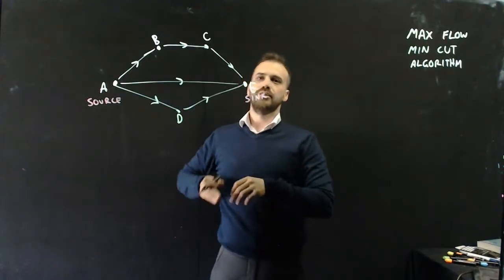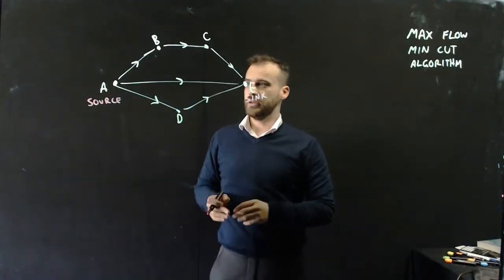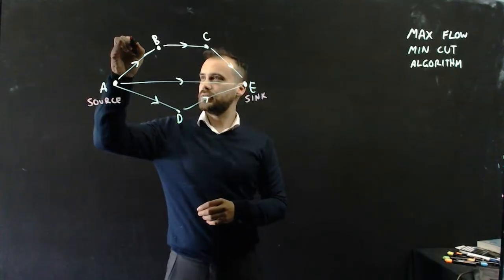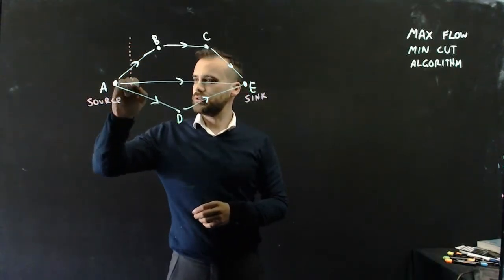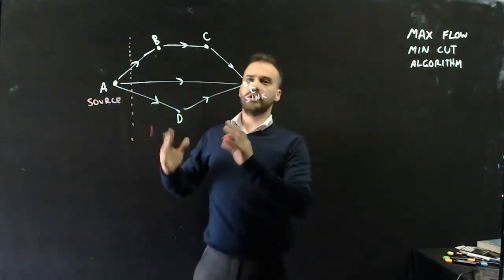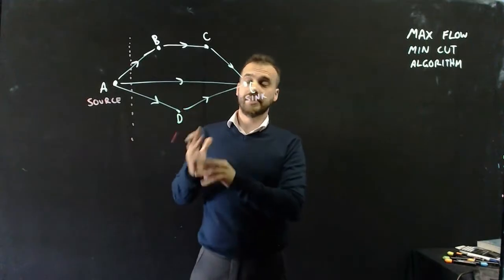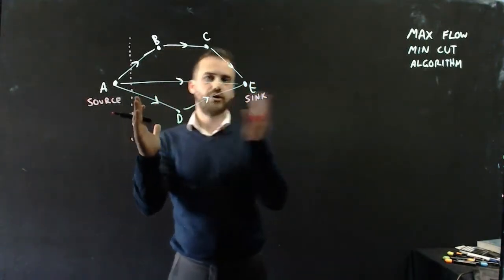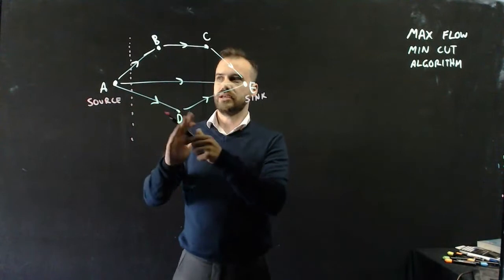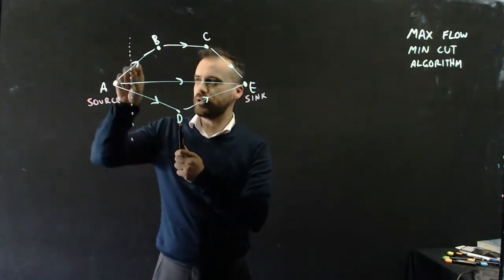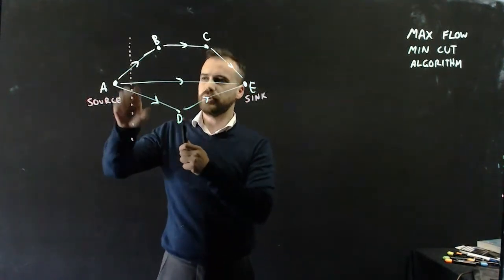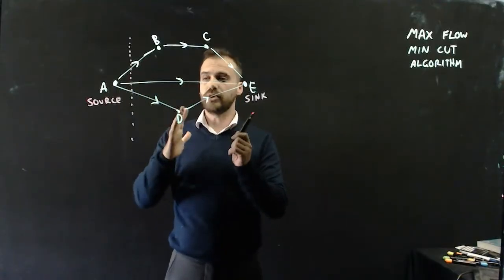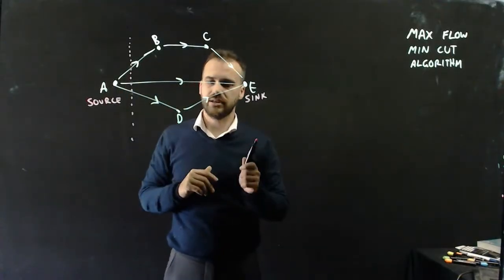We're just going to cut through the edges. I've created a cut — I've cut off the source from the sink. You can imagine I put a block there, a block there, a block there. No water can get through at all from the source to the sink.